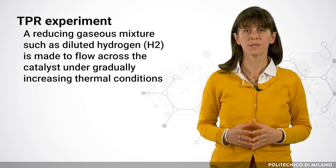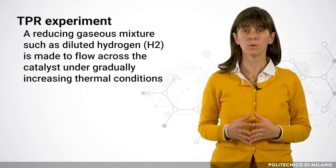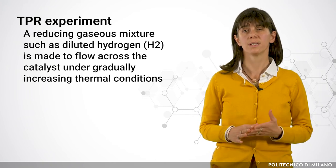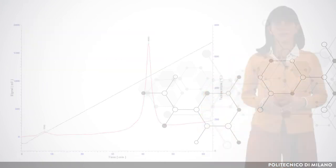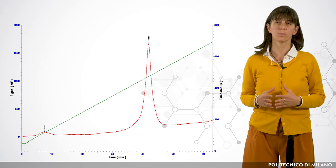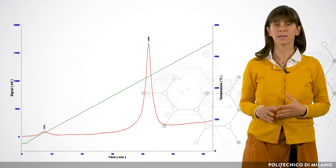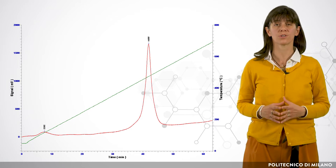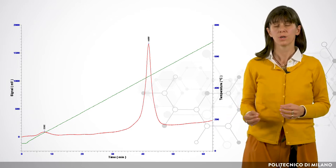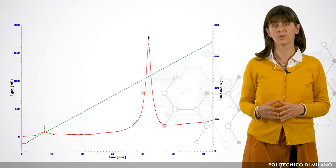In a typical TPR experiment, a reducing gaseous mixture such as diluted hydrogen is made to flow across the catalyst under gradually increasing thermal conditions. This linear heating allows the reduction rate to be correlated with temperature. A highly sensitive detector continually analyzes the chemical difference in atmospheric concentration at the outlet of the reactor, producing an accurate picture of the maximum or peak reduction rate of the catalyst.